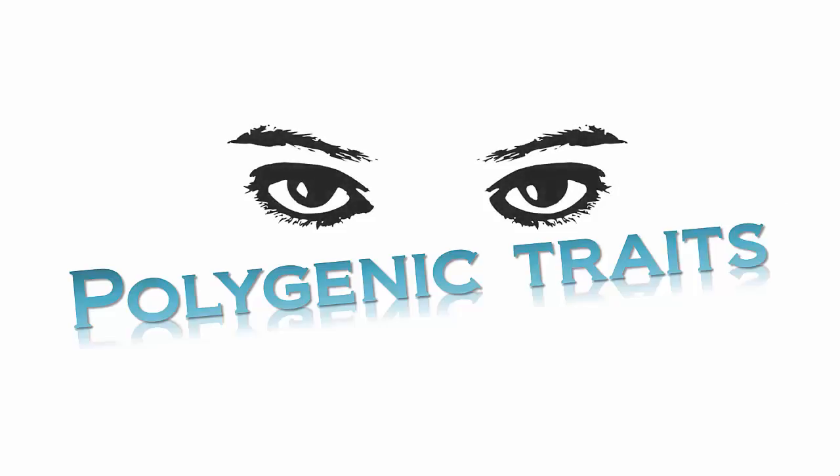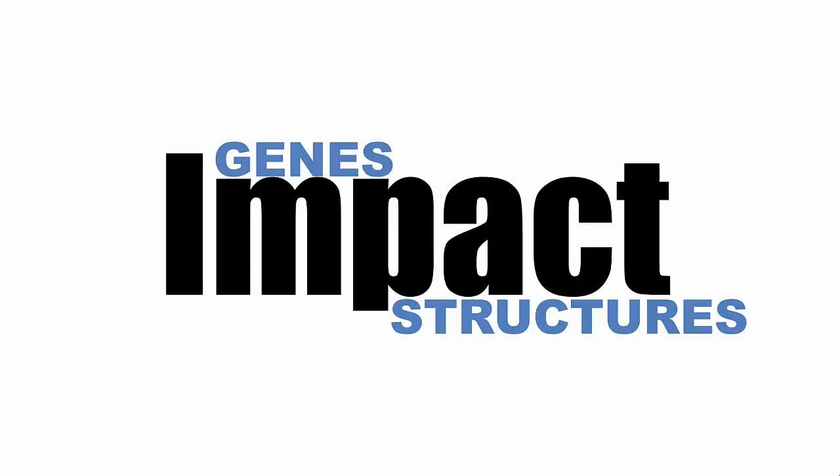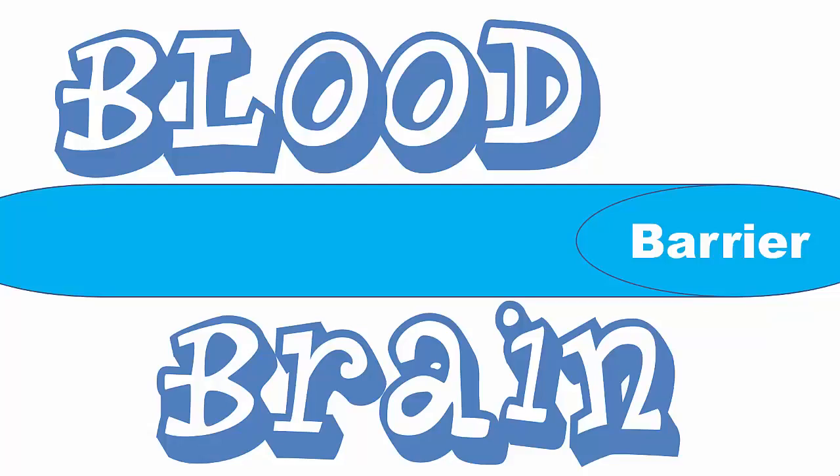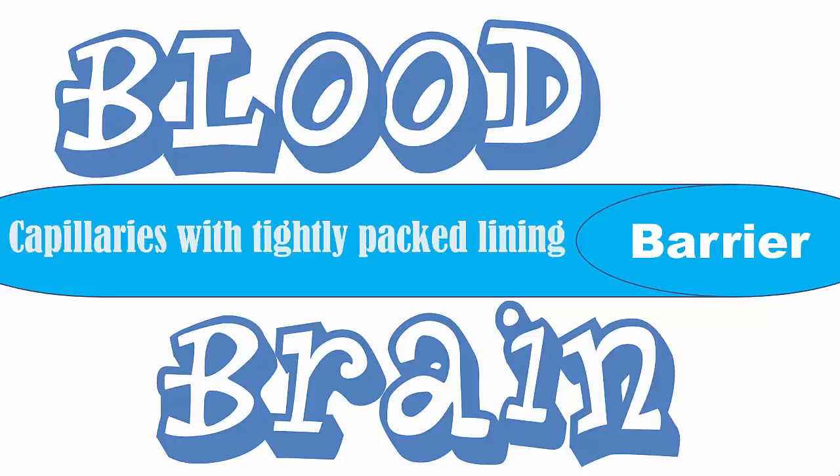Genes impact behavior indirectly. They impact structures. Genes build your blood-brain barrier, determining how well it keeps diseases out of your brain. Genes also impact processes, such as hormone delivery and drug metabolism.